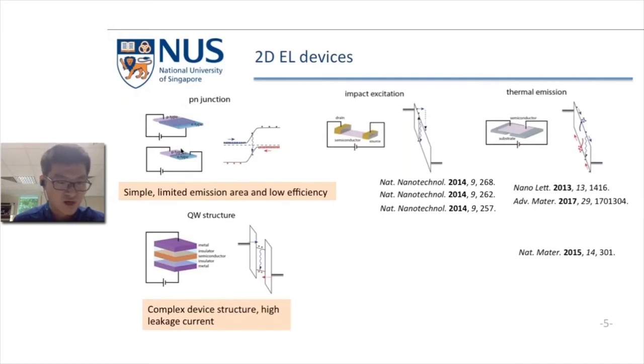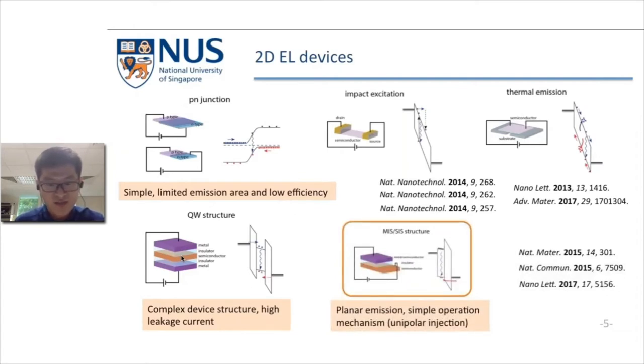Quantum well structures have been proposed to achieve planar emission. For example, a thin layer of hBN can be used to encapsulate the semiconductor monolayer and inject electrons and holes simultaneously to the semiconductors. However, for this type of device, typically the hBN thickness was chosen to be quite thin, and the confinement effect to the carriers in the semiconductor is limited. So that brings large leakage current in the devices. In this talk, I will focus on the MIS structure consisting of metallic, insulating, and semiconductor layers. In these devices, we achieved planar emission and we expect the working mechanism will be unipolar carrier injections.